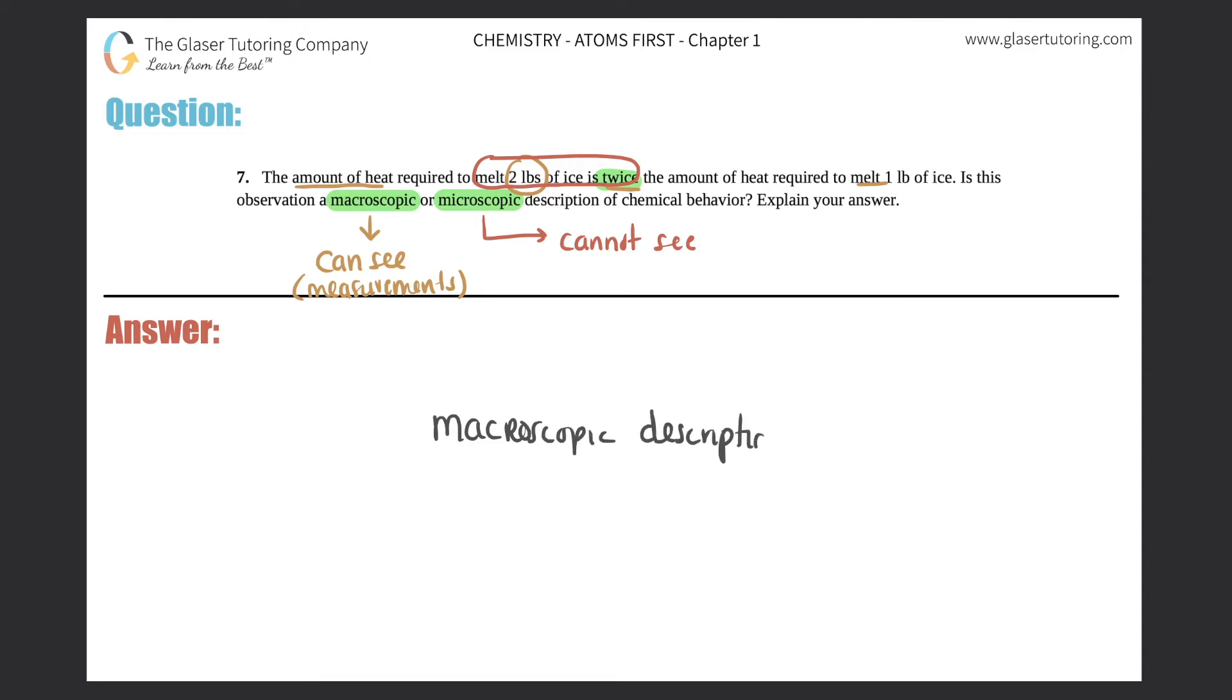Explain your answer: Because this is basically a measurement—you're just seeing how much heat was actually required to melt two pounds of ice. Since it's a measurement and we can see it happening, it's a macroscopic description.